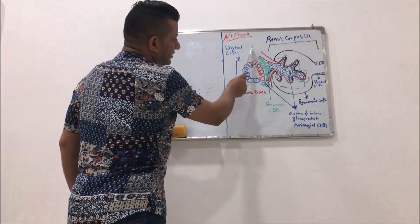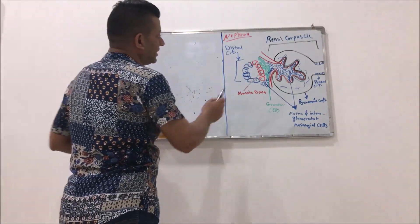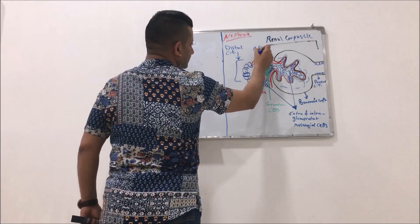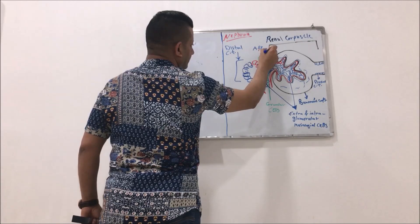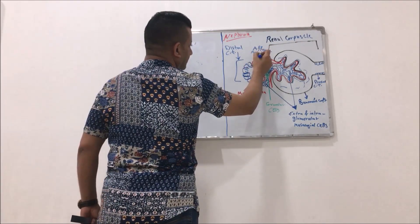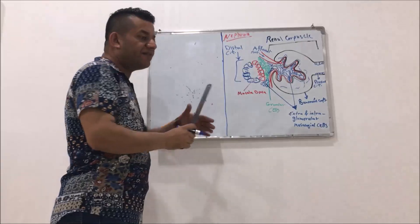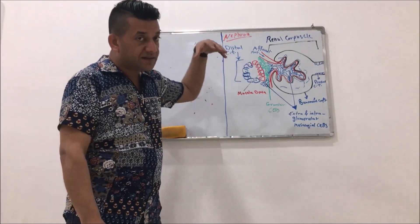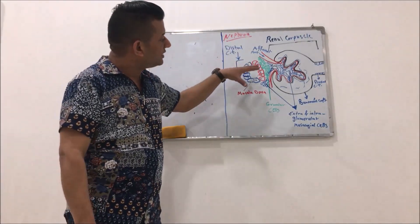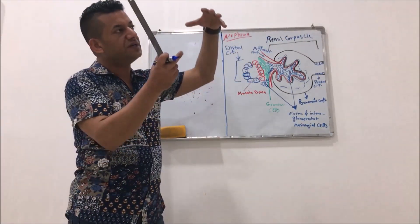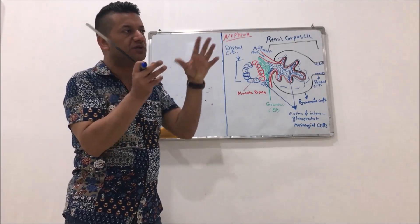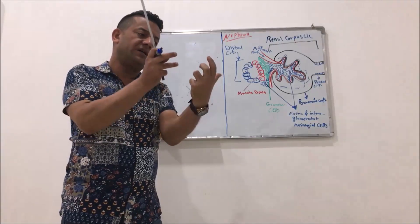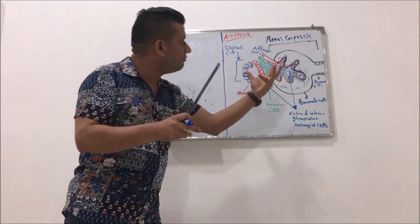The afferent arteriole. Afferent arteriole means the arteriole that enters the glomerulus — enters inside the Bowman capsule to form, later on, a tuft of arterioles to form the glomerulus.